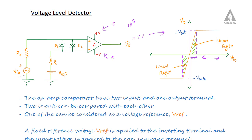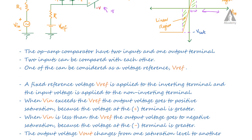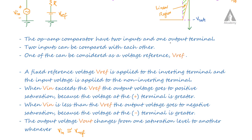Here in the circuit, the input voltage Vin is applied to the non-inverting terminal. The op-amp comparator produces an output voltage Vout. If we apply the input voltage to the non-inverting terminal and reference voltage to the inverting terminal, the comparator compares them and produces an output. The op-amp comparator has two inputs and one output.